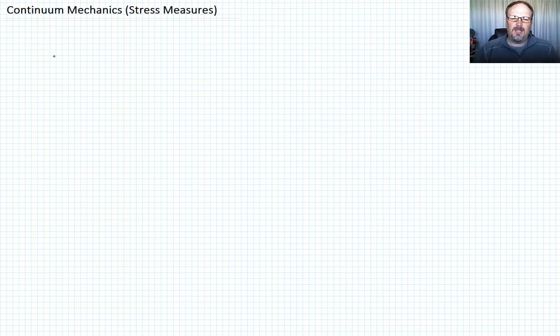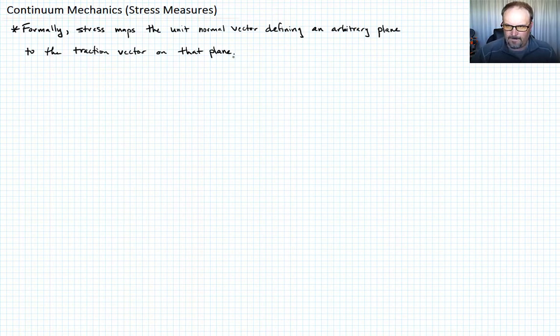So formally, how do we define stress? Let's think about that. Formally, stress is a tensor. And what does a tensor do? It maps a vector to a vector. In this case, stress is going to map an arbitrary plane defined by its unit normal, so it's going to map that unit normal vector to the traction vector on that plane.